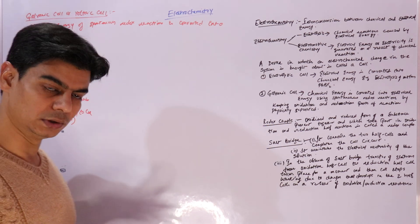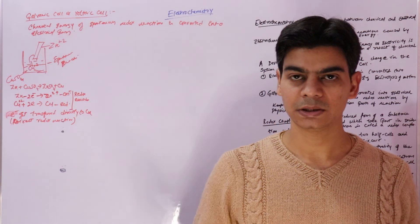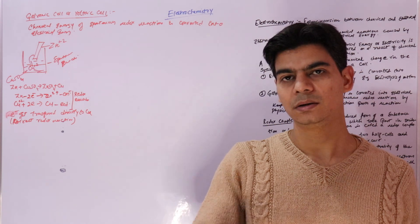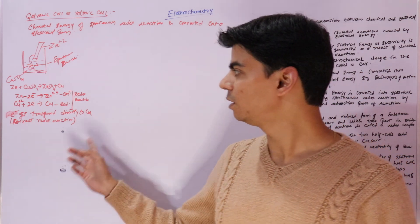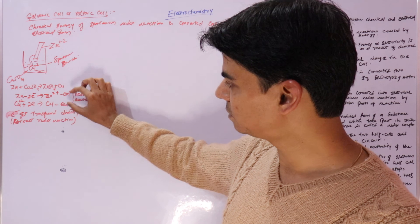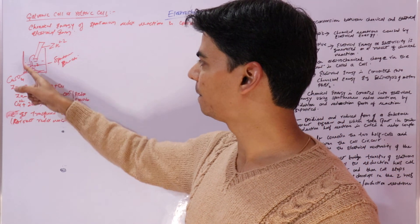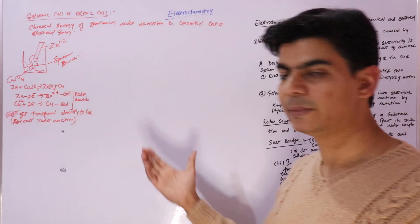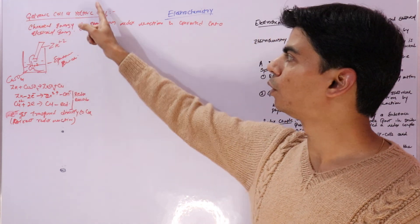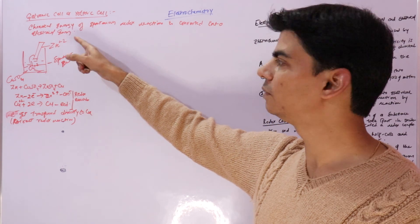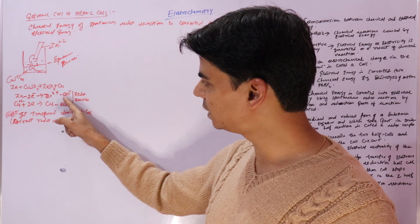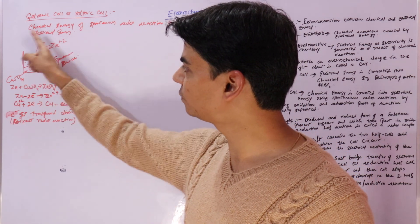Luigi Galvani and Alessandro Volta are the two scientists who performed these spontaneous reactions to convert chemical energy into electrical energy. Instead of carrying out the reaction in a single beaker, they carried out the oxidation and reduction reactions in separate beakers to make electric current. The galvanic cell is named in honor of Luigi Galvani, and the voltaic cell is named in honor of Alessandro Volta.